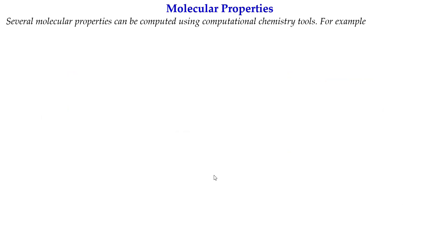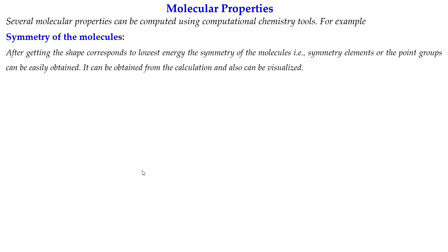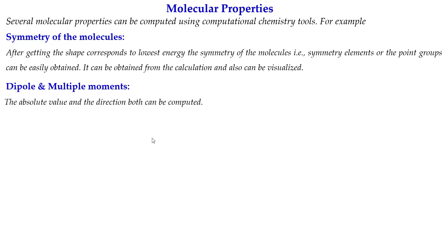Not only chemical reactions, but also several molecular properties can be computed using computational chemistry tools. For example, the symmetry of molecules — how they can be defined using point groups — which you will also learn about in your group theory course. After getting the shape corresponding to the lowest energy, you can identify symmetry elements like rotational symmetry or planes of symmetry by visualizing them through computational chemistry tools. Dipole and multipole moments — both their absolute values and directions — can also be computed.